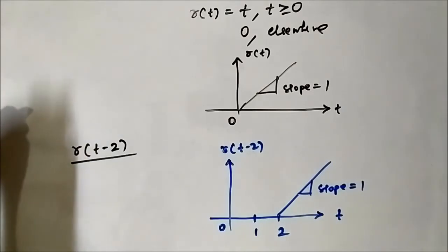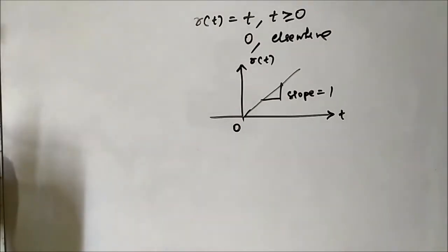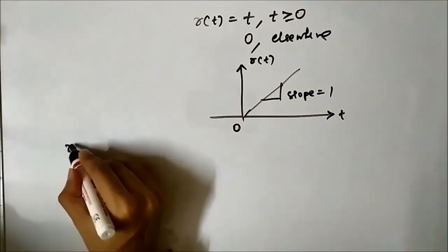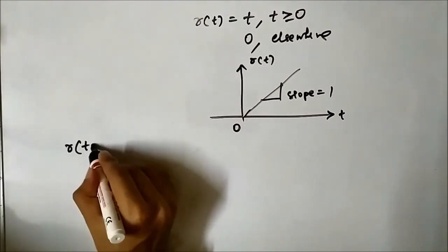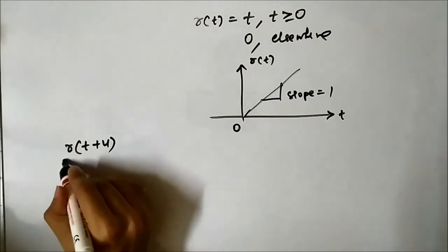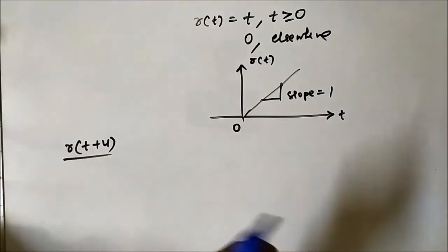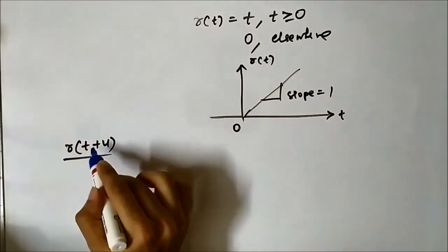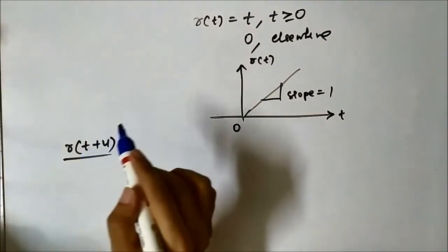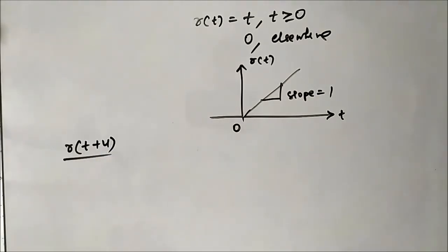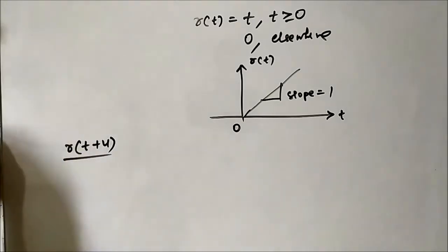Let us also do the shifting in the other direction. Let us do R(t) plus 4. Again, the sign convention: plus means the shifting will take place towards the left, and 4 means the shifting will take place to the left by 4 units.